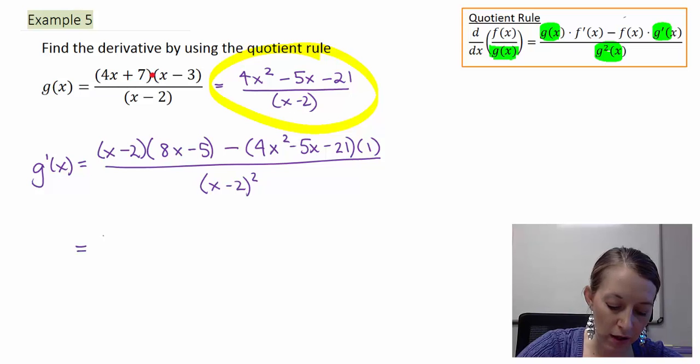Okay, so in my first, I need to FOIL: 8x squared, outside negative 5x, inside negative 16x. That gives me a negative 21x. Last, plus 10.